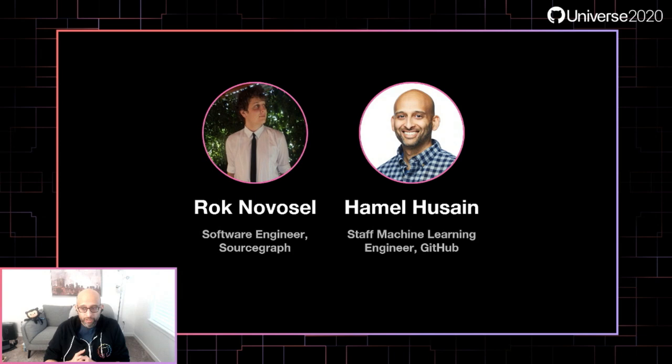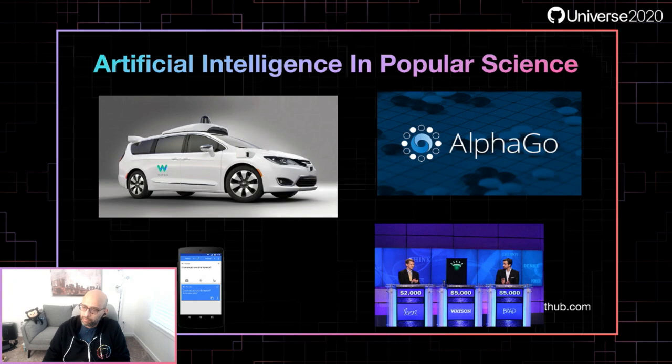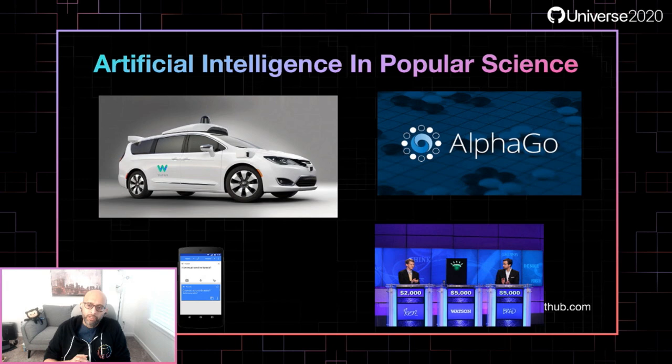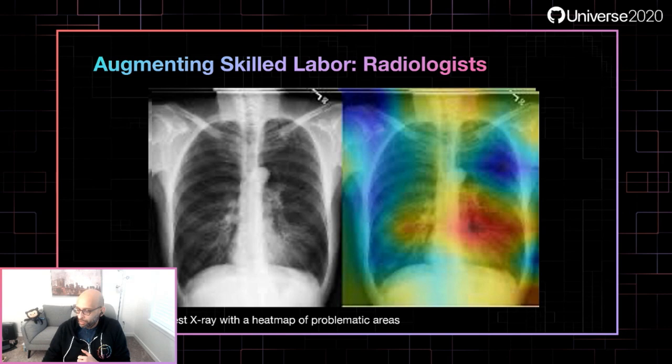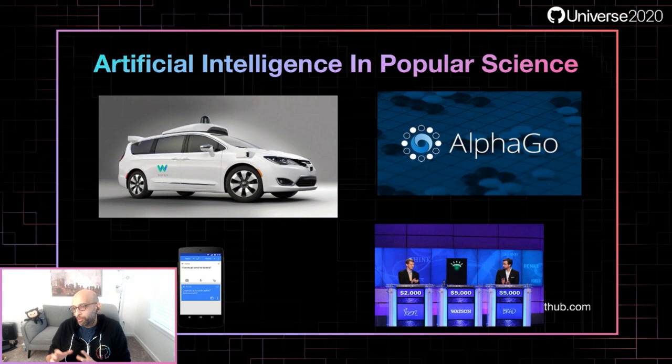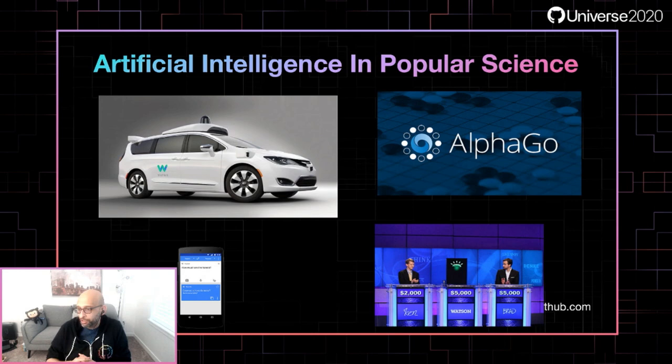However, there's another side to artificial intelligence — a side that can help everyday people do their jobs, especially skilled labor. For example, radiologists: we see artificial intelligence helping radiologists zone in on potential areas where there might be a disease or a diagnosis. There's a heat map where the algorithm has highlighted for the radiologists points of interest that they might want to pay more attention to. It doesn't replace the radiologists, it augments them and makes them more effective at what they're doing.